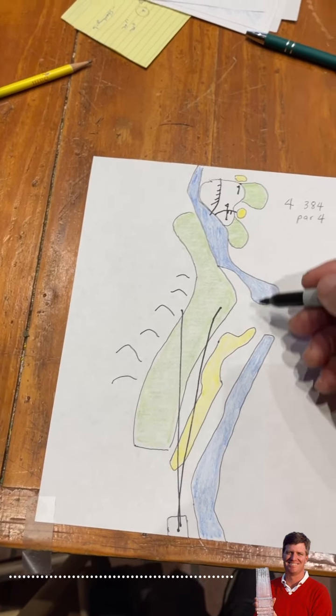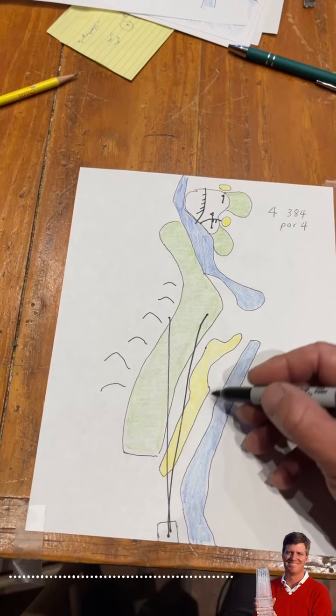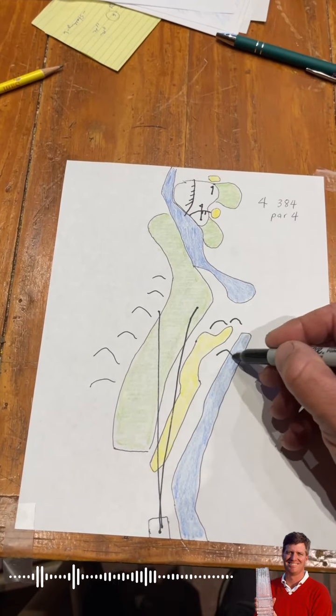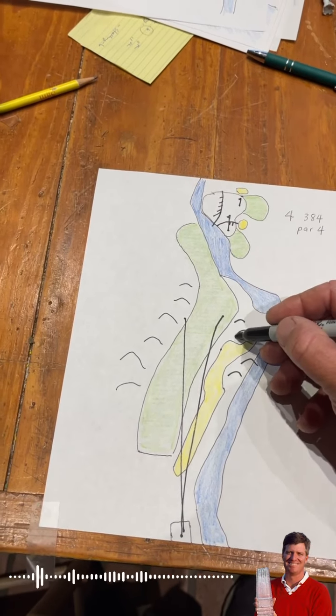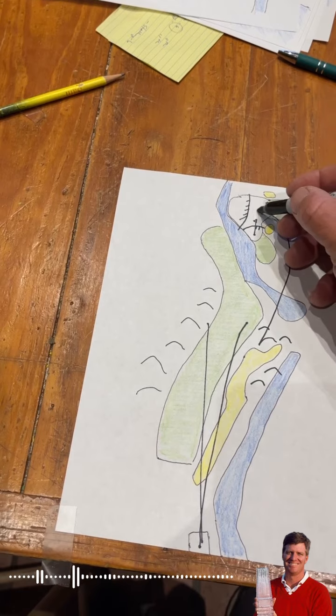I remember in the year Nick Price won, he was over here and there were some hills here. He was standing up, ball well above his feet. Hit a shot up, landed on top, rolled up and went down the hill into the hole.